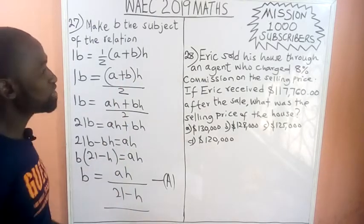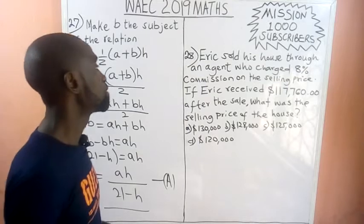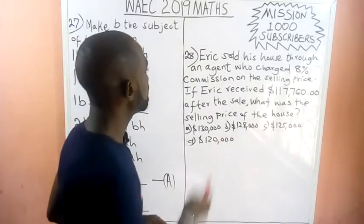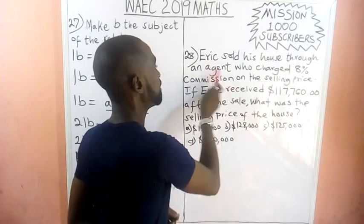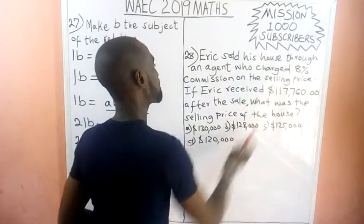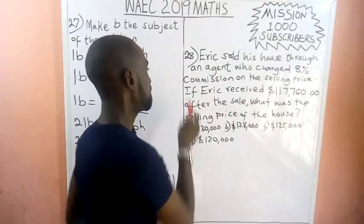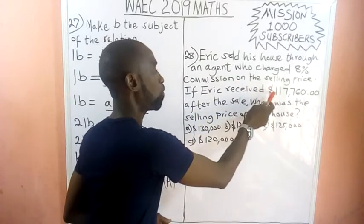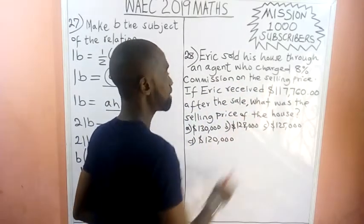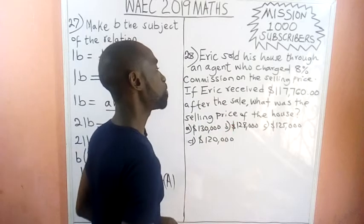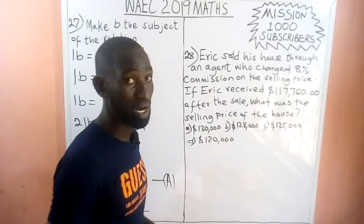This is what we call change of subject of formula. So question number 28 says: Eric sold his house through an agent who charged 8% commission on the selling price.